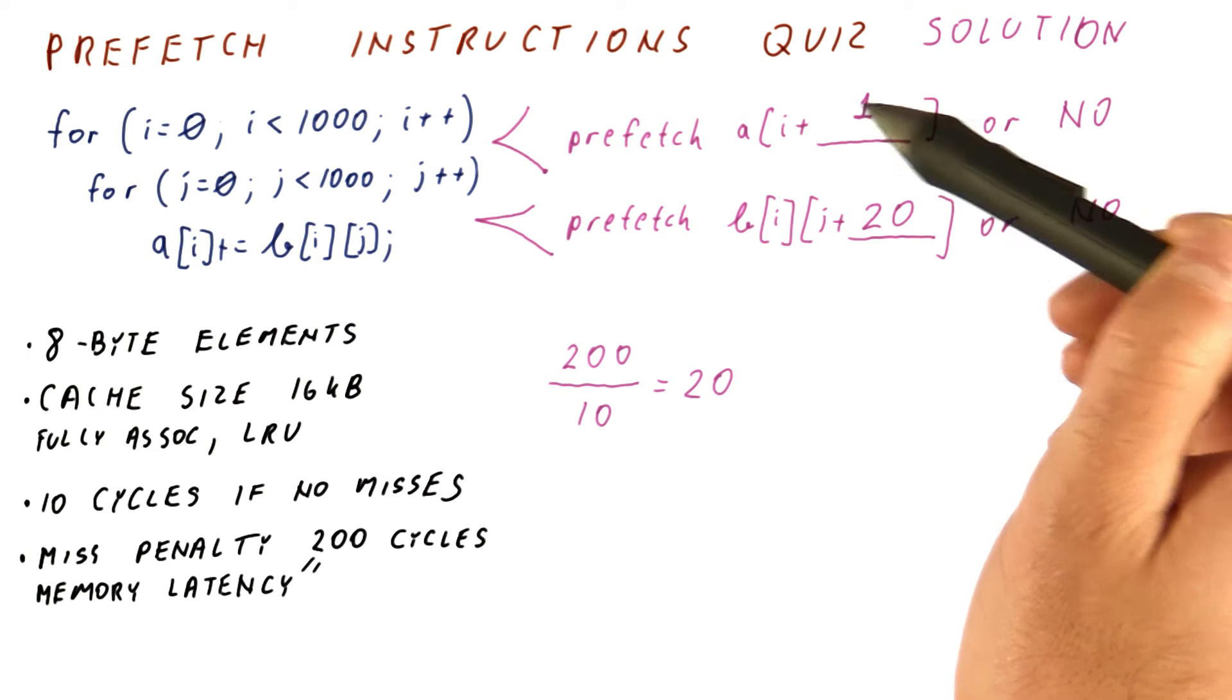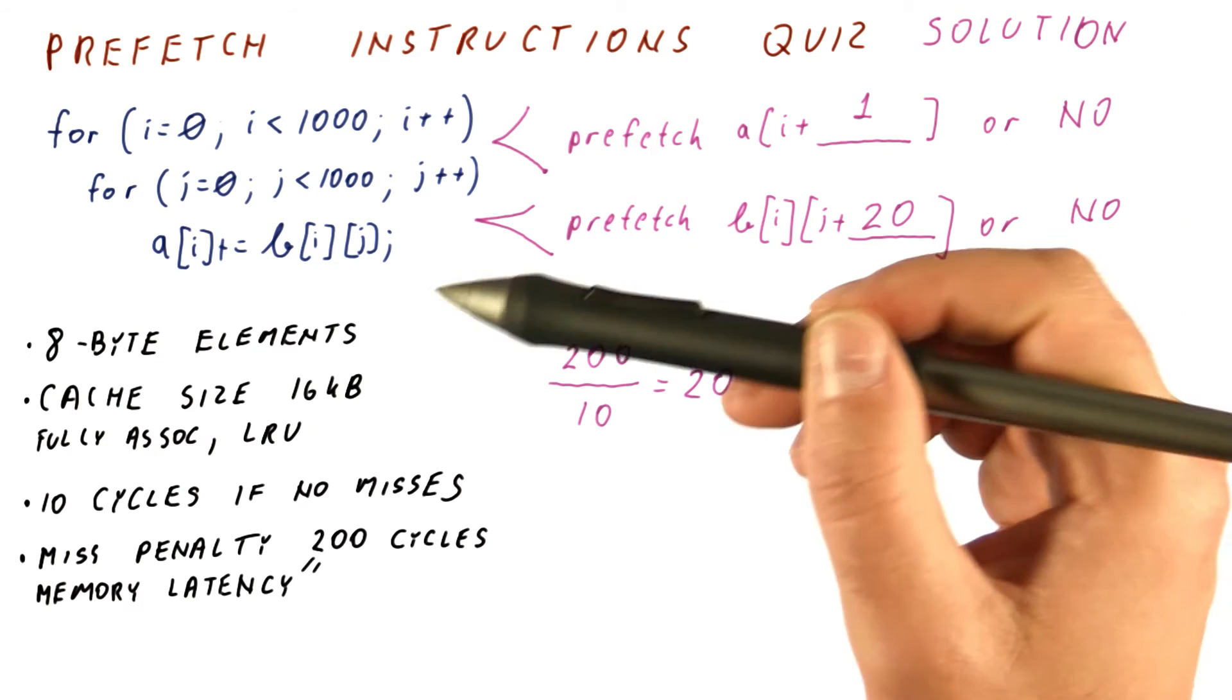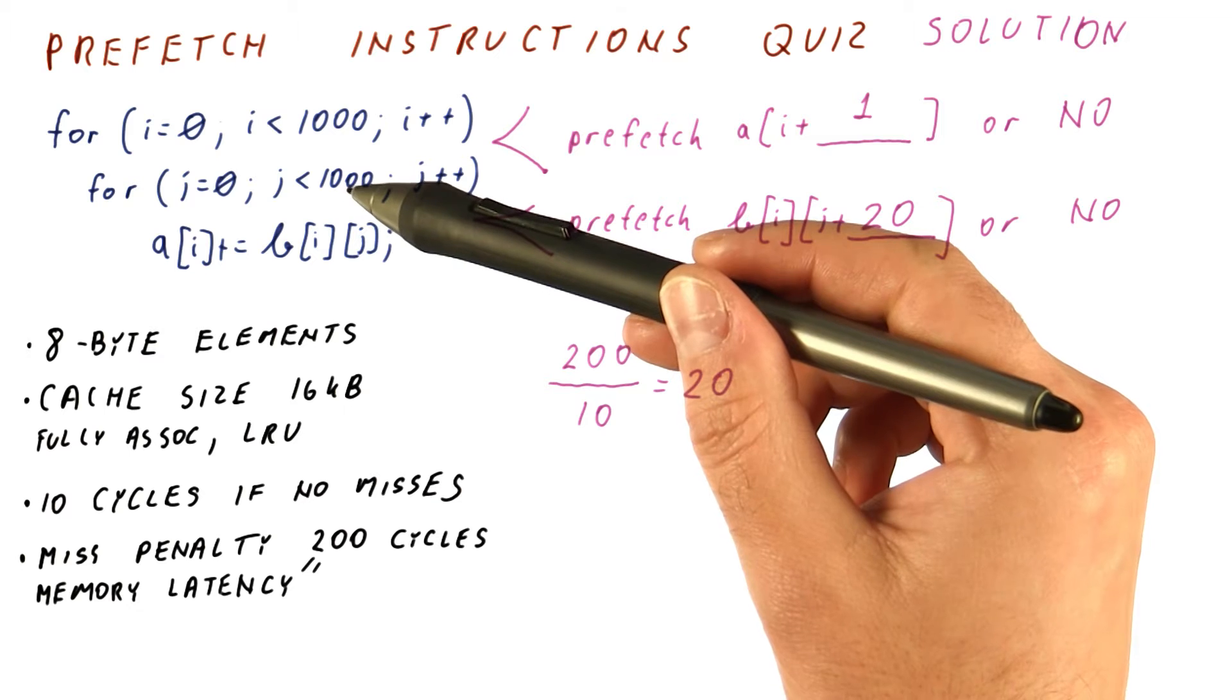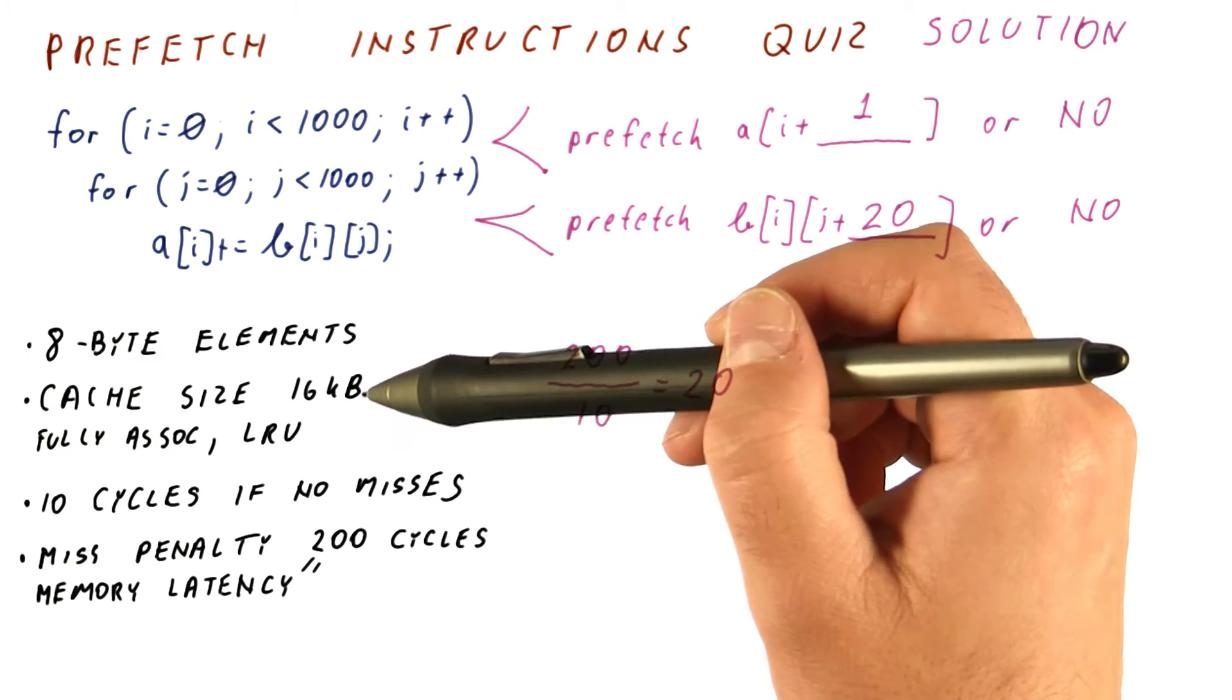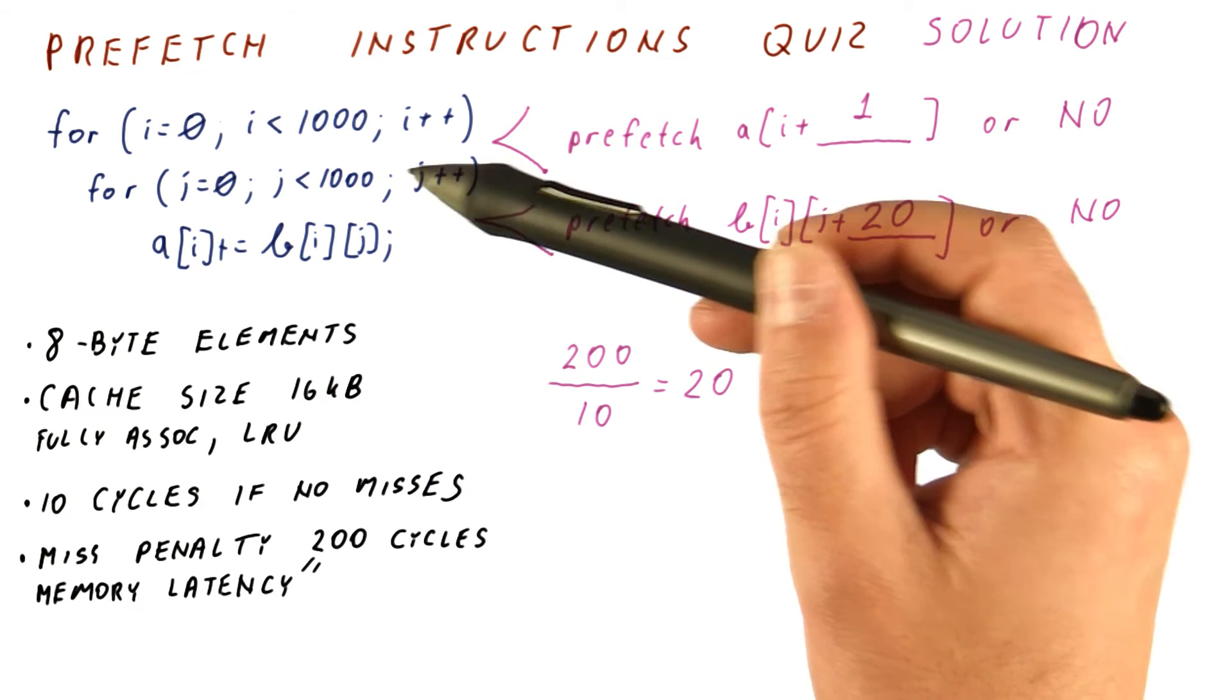The question is, does this element get kicked out before we can use it? The answer is no, because 8 times 1,000 equals 8,000, and the cache is 16 kilobytes.